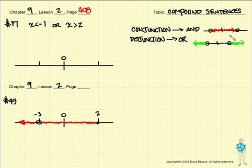Number 17 says, let's make a graph of this disjunction. And number 17 already calls it out as a disjunction, and we know that it's true because we have the or. So we're going to make our graph on the number line.